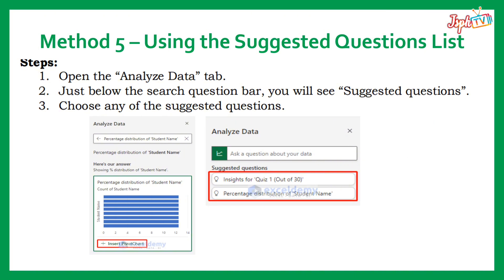And last, Method 5: Using the Suggested Questions list. Open the Analyze Data pane. Just below the search question bar, you will see Suggested Questions. Choose any of the Suggested Questions.